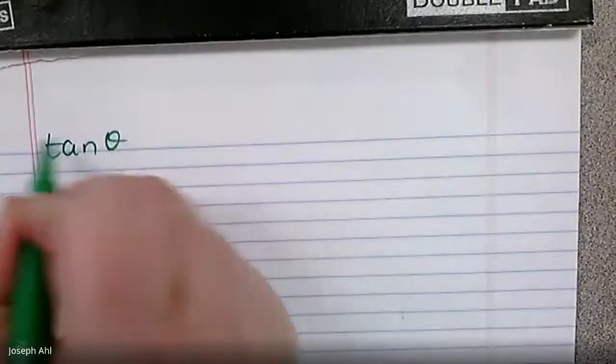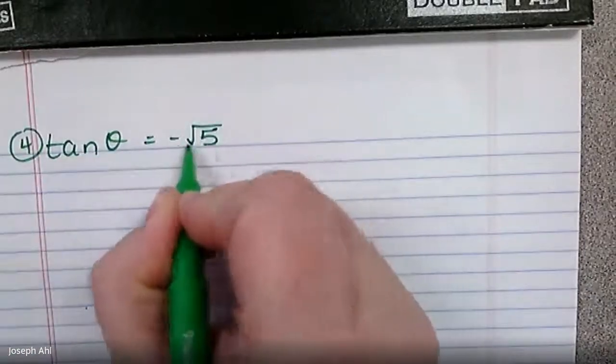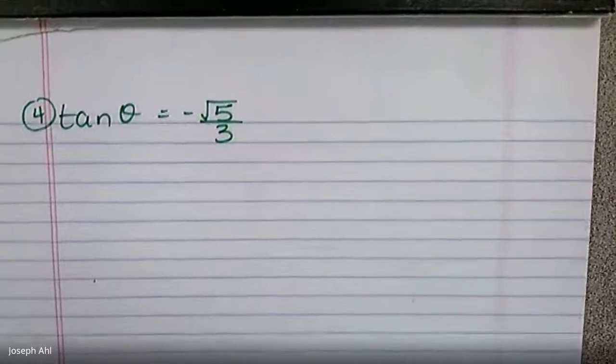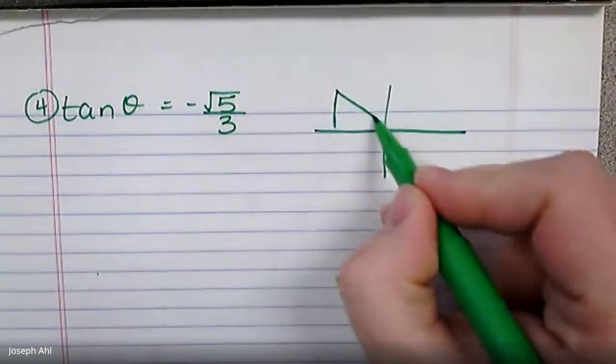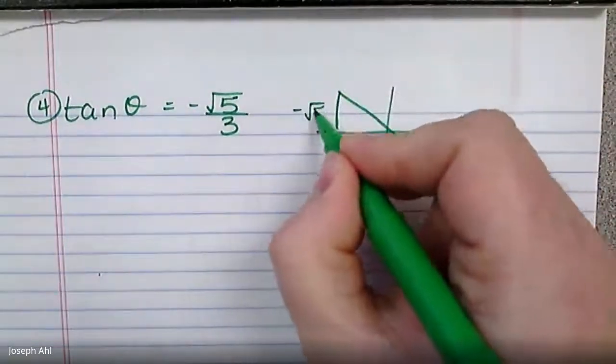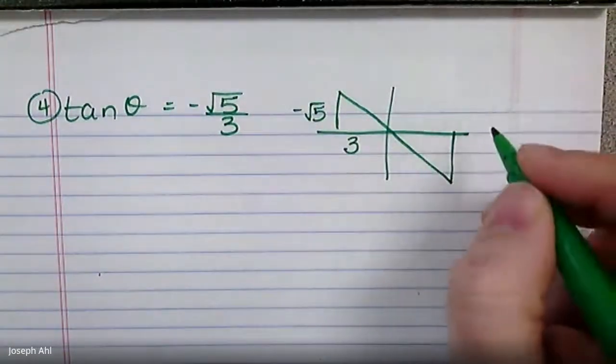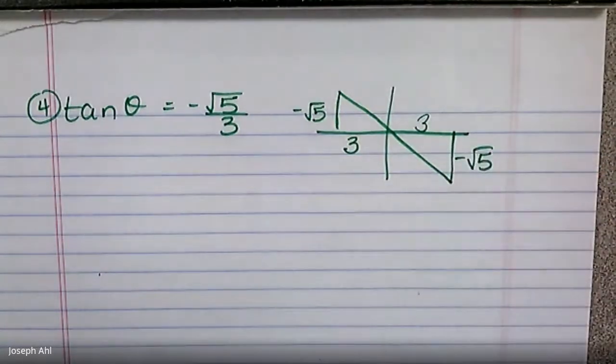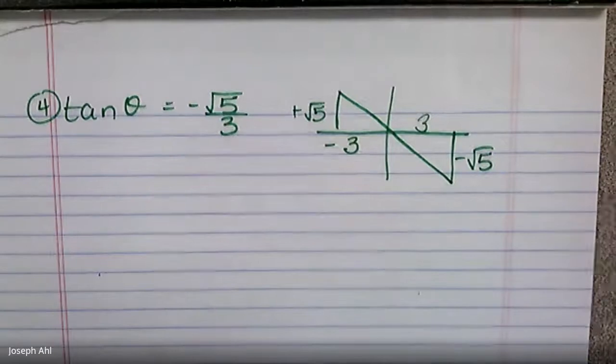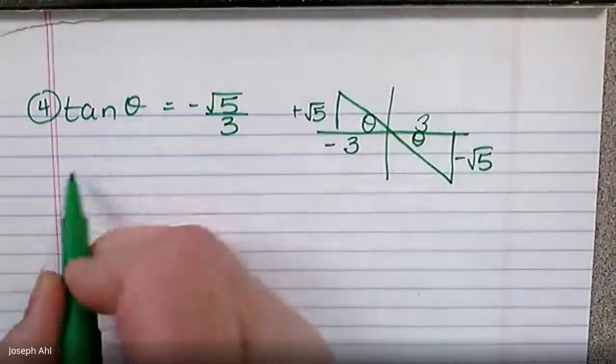I'm going to do one more just so that we're kind of confident with some calculator work here. The last one that we'll try is let's do tan theta equals negative radical five over three. First things first, where is tan negative? Tan is negative in quadrants two and four. We've got opposite of negative radical five, adjacent of three. And as soon as I label those things, I can see that this is not a special triangle. I've never seen radical five on a side, right? So I'm not thinking 30, 45, and 60 for the reference angles.